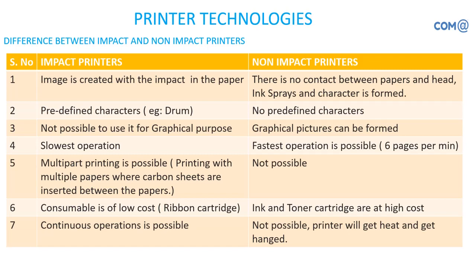In the case of non-impact printers, there is no contact between the paper and the head. The ink is sprayed in the case of an inkjet printer, or in the case of a laser printer, powder is sprayed over the paper. There are no predefined characters — whatever you have on your computer screen comes out as output, including graphical pictures. Based on the quality of printer and ink used, you can get near photo-quality printouts. The fastest operation prints a minimum of six pages per minute.